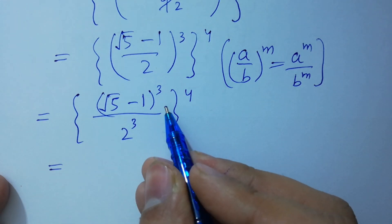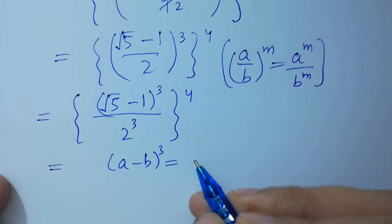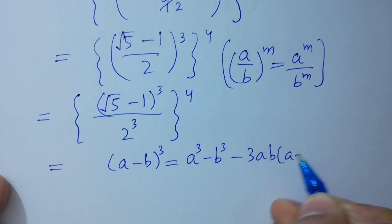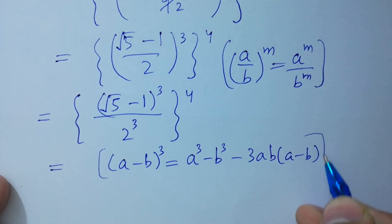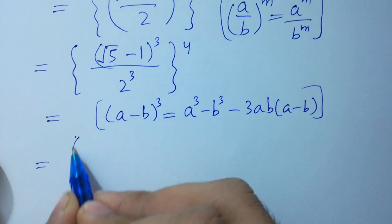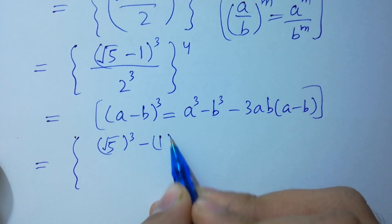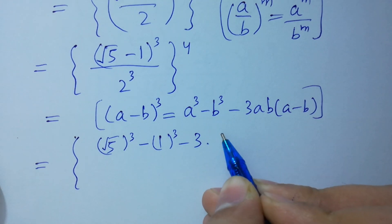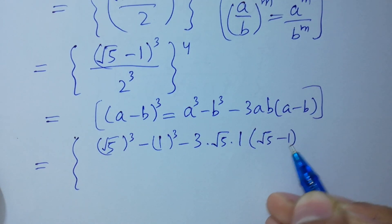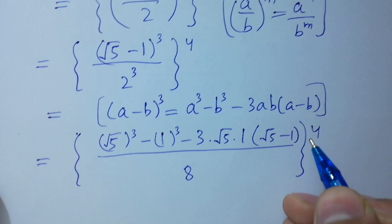Expanding using (a - b)³ = a³ - b³ - 3ab(a - b), with a = square root of 5 and b = 1, the numerator becomes: square root of 5 cubed minus 1 cubed minus 3 times square root of 5 times 1 times (square root of 5 minus 1), over 2 cubed = 8, to the whole power 4.